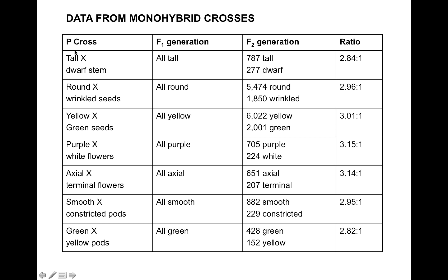This is the data that Mendel got when he did many different crosses. The parental crosses were true breeding tall and dwarf, round and wrinkled, yellow and green, and in every single case in the F1 generation, all of these crosses exhibited a single dominant phenotype, which means that the other phenotype was recessive. When he counted the F2 generation, he found that the ratio of dominant to recessive phenotypes was always three to one.